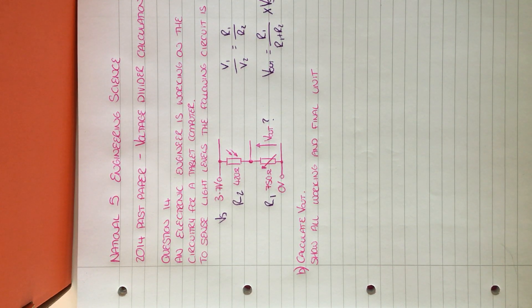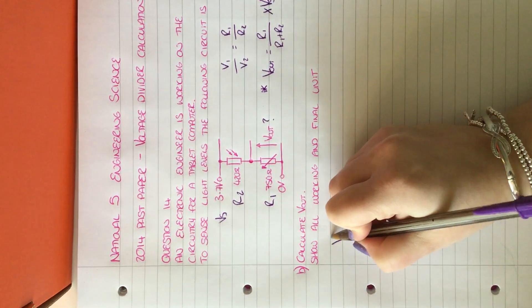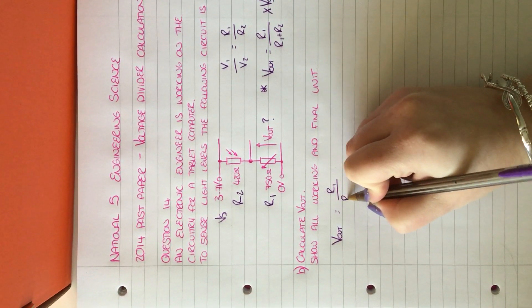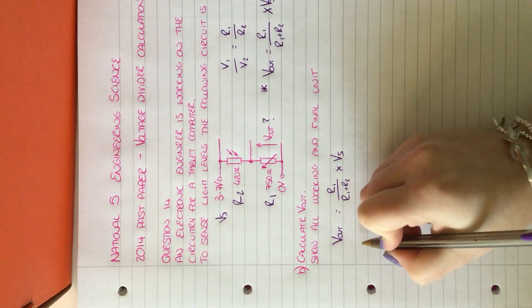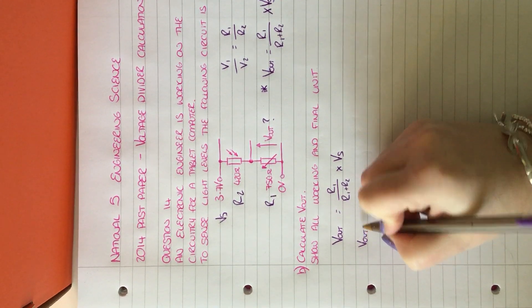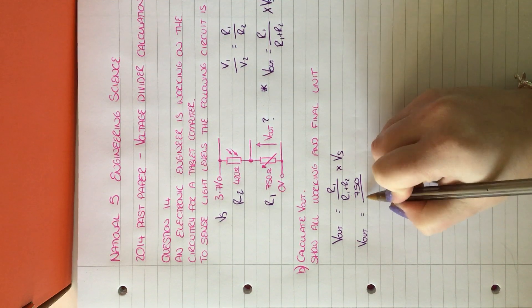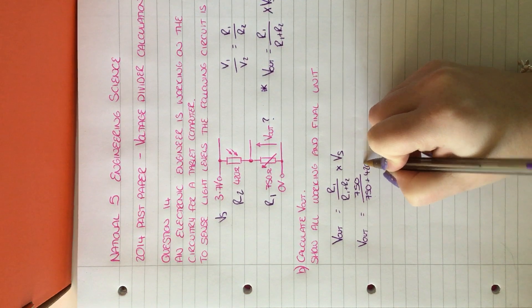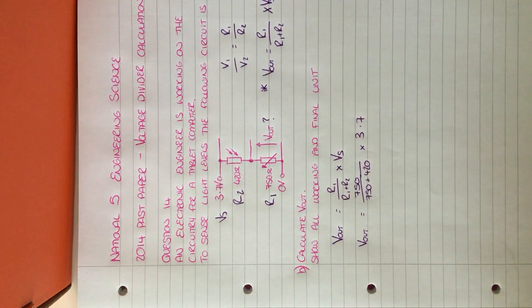From there, what we then need to do is substitute into the equation. So I've got V out equals R1 over R1 plus R2 multiplied by my voltage supply. When I substitute in, I've got V out equals 750 ohms divided by 750 plus 420. And that is all going to be multiplied by 3.7 to get my voltage.